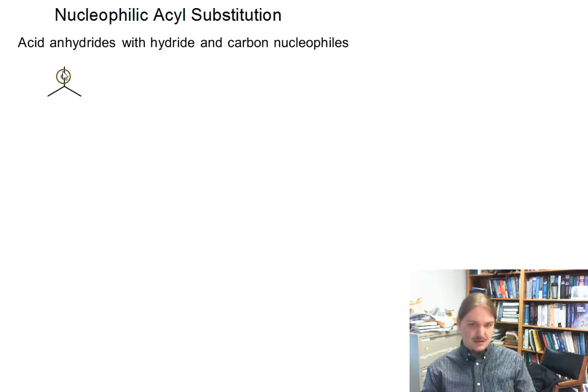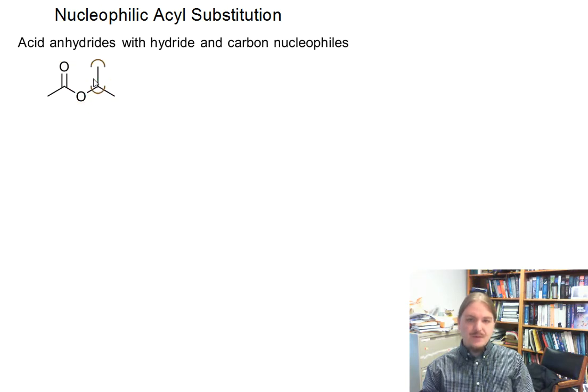Certainly, there are textbook authors who will share that acid anhydrides can be converted into aldehydes and ketones. We're going to talk about all of those different things.